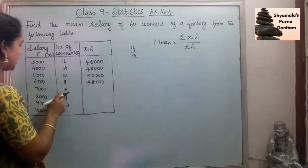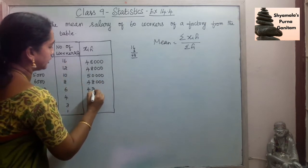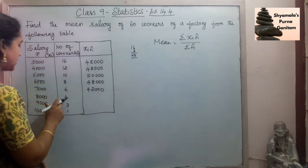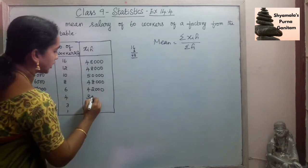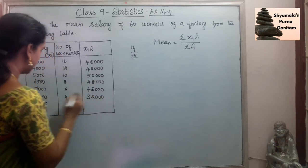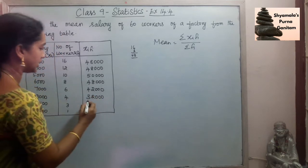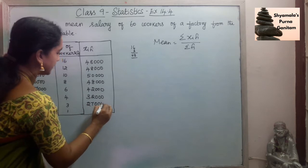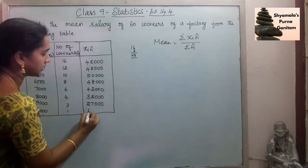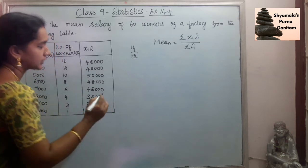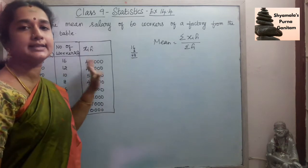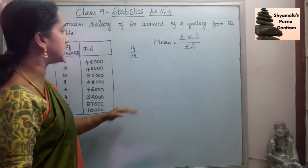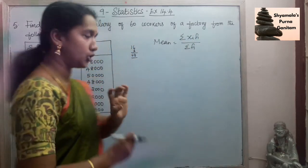Then 7000 into 6 is 42,000. Then 8000 into 4 is 32,000. Then 9000 into 3 is 27,000. Then 10,000 into 1 is 10,000. So we have multiplied Xi and Fi for all rows, and if we add all these values that gives us the numerator.